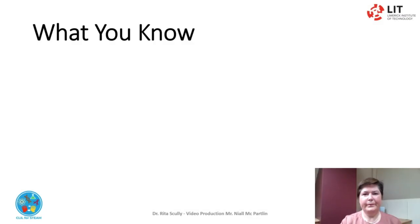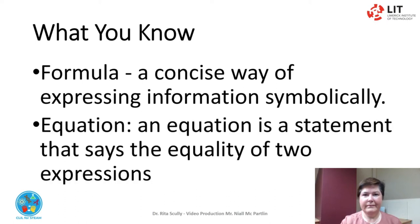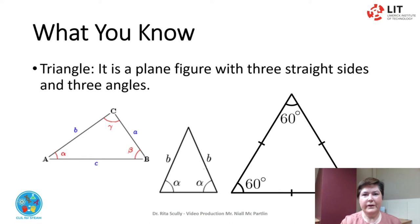To help you understand the Pythagoras Theorem, it would help to review some information on formulas, equations, and triangles. A formula is a concise way of expressing information symbolically. An equation is a statement that says the equality of two expressions. A triangle is a plane figure with three straight sides and three angles. It would also assist to review equiangular and similarity in triangles.